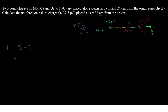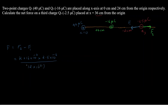F2 = k × 16×10⁻⁶ × 2.5×10⁻⁶ divided by (12×10⁻² )², and F1 = k × 40×10⁻⁶ × 2.5×10⁻⁶ divided by (36×10⁻²)². The distance between q2 and q3 is 12 cm, and the total distance between q1 and q3 is 36 cm.